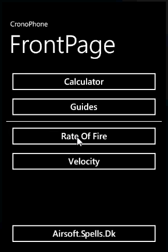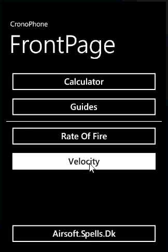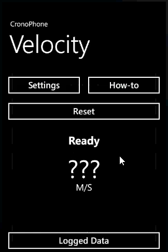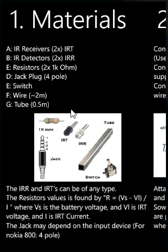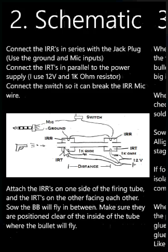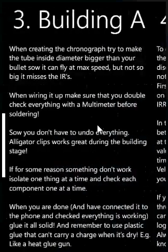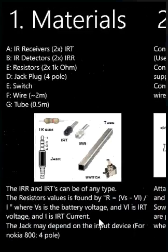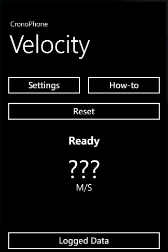Then we have rate of fire and velocity. Velocity needs some hardware — there's a how-to that describes how to make the hardware needed. You can build your own velocity gauge and use this app to get the calculated values.